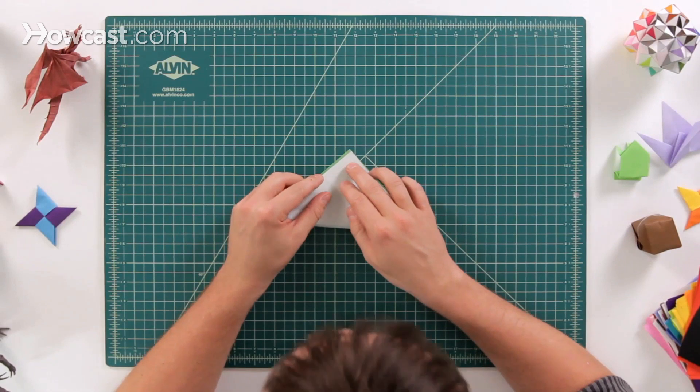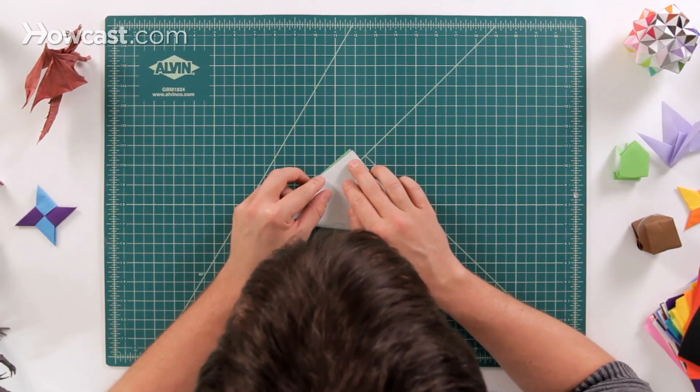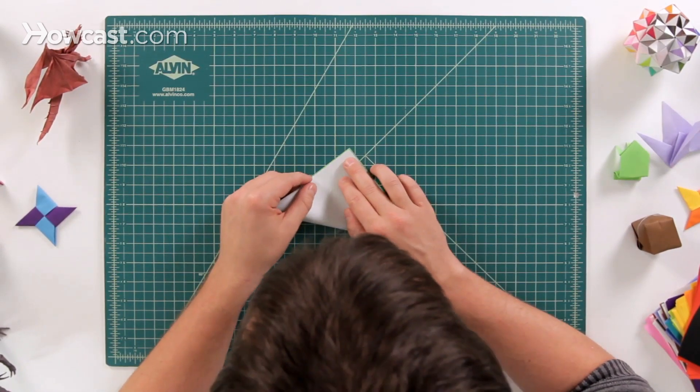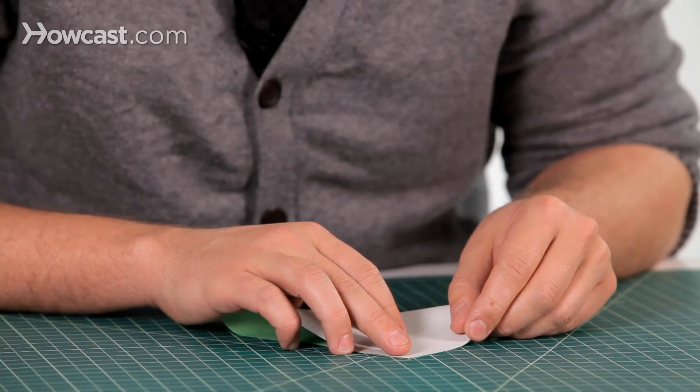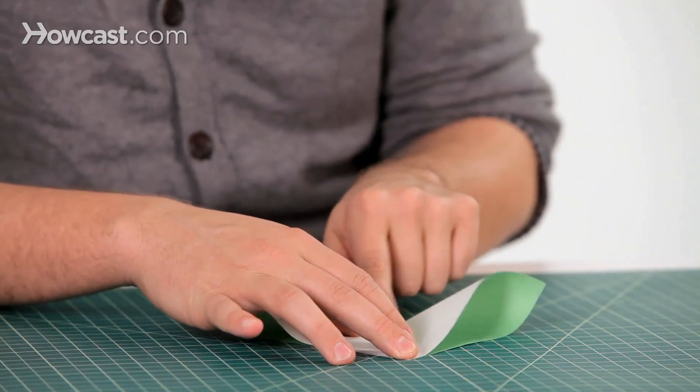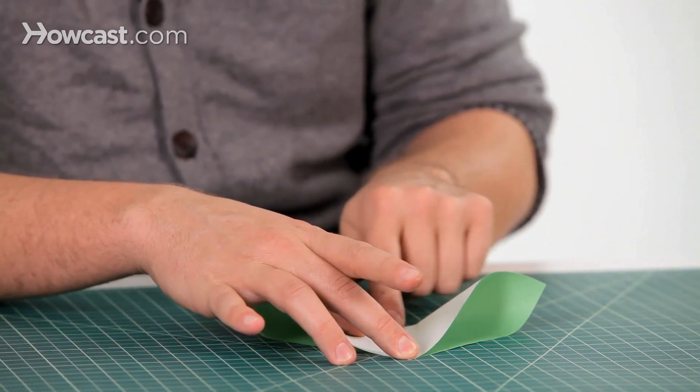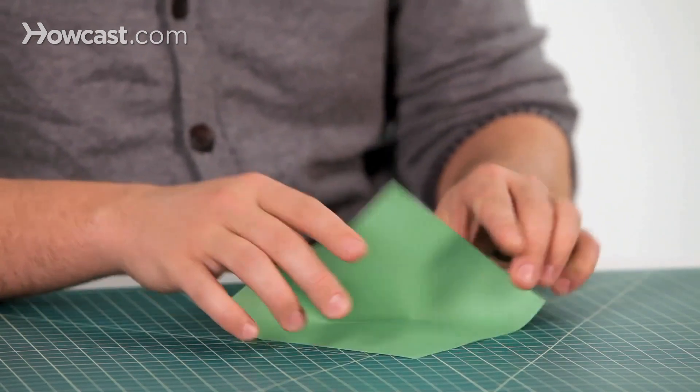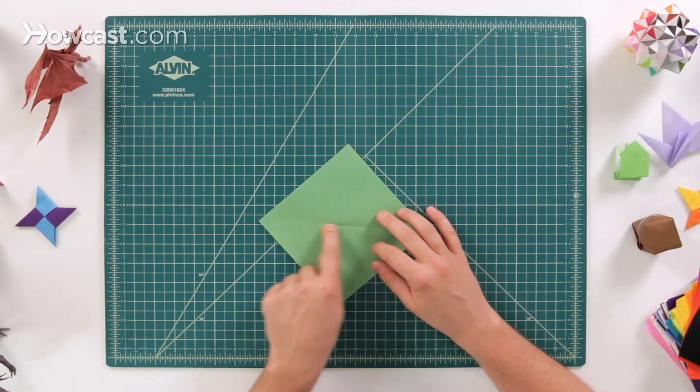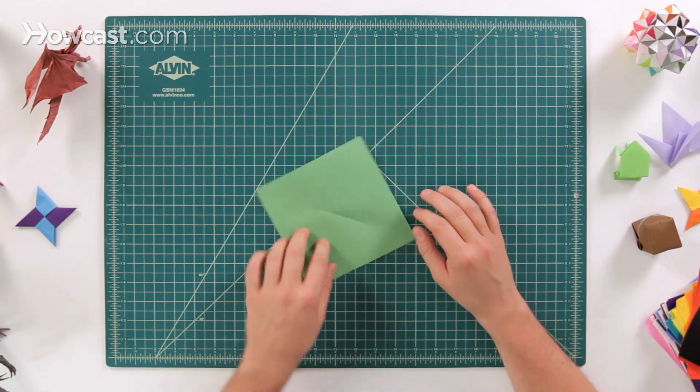So we're going to fold a diagonal crease. Make sure that it's nice and exact, where you can see the two points are right on top of each other. And just make a little tack right here. You don't have to make the whole crease. Just make a little mark so that that little crease shows up.